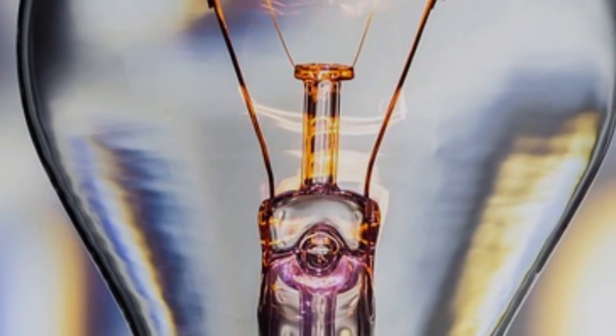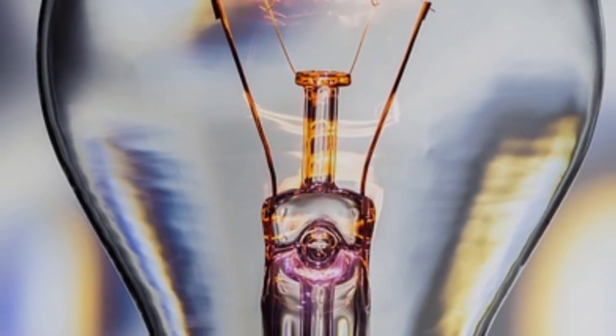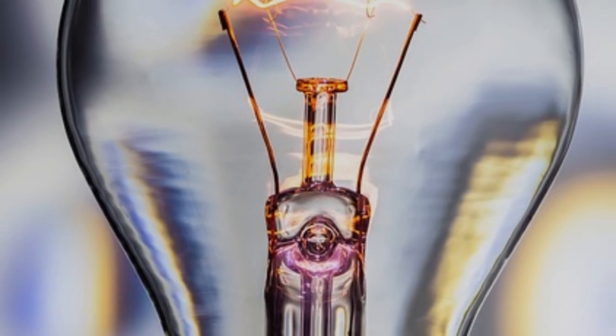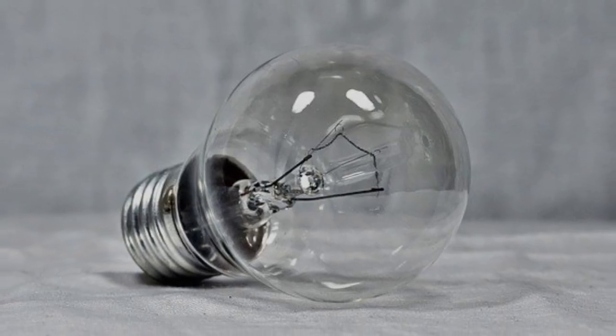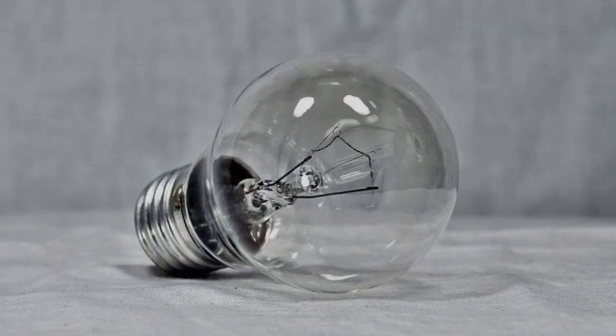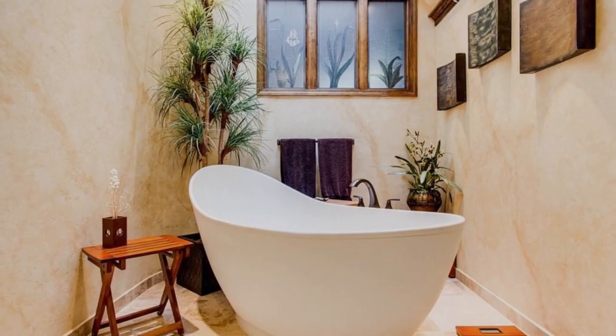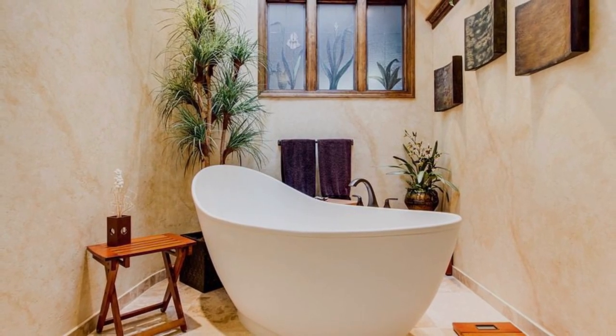Dimmable LED bulbs. Pay attention to the type of LED bulb you're using. If you want to dim the LED bulb, make sure it's labeled as dimmable and compatible with your dimmer switch. Non-dimmable LED bulbs may flicker or get damaged if used with a dimmer switch.